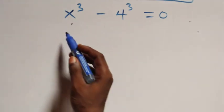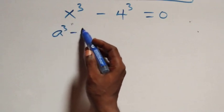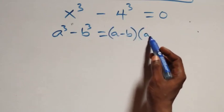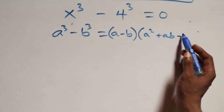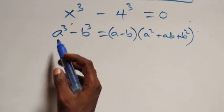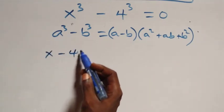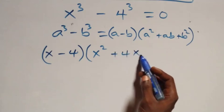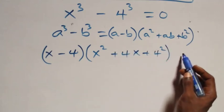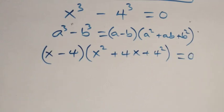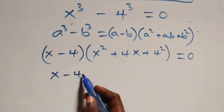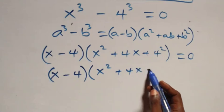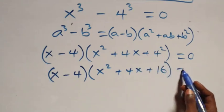Solving from the second case, this follows the difference of cubes: a³ - b³ = (a - b)(a² + ab + b²). Here this becomes (x - 4)(x² + 4x + 4²) equals 0, which is (x - 4)(x² + 4x + 16) equals 0.